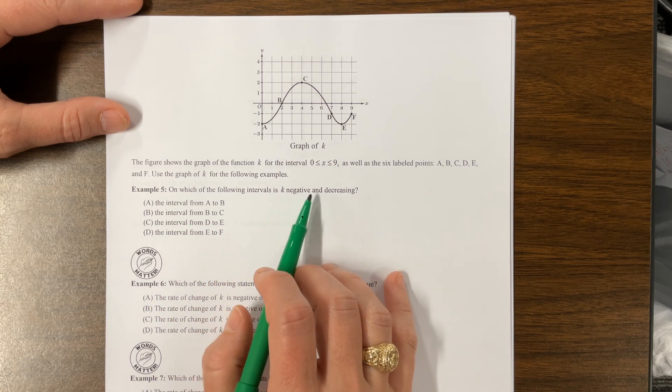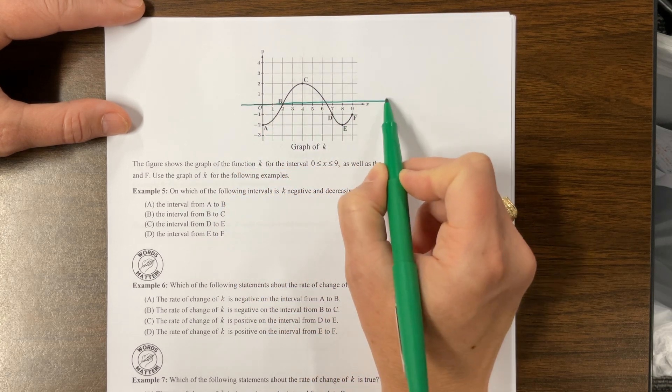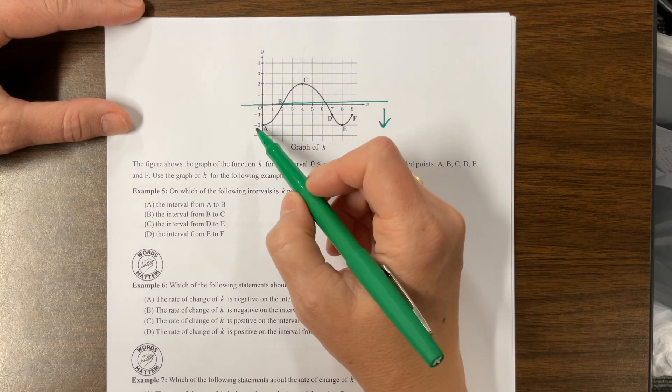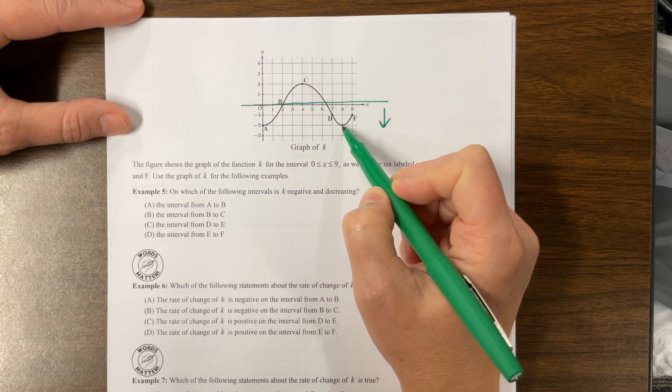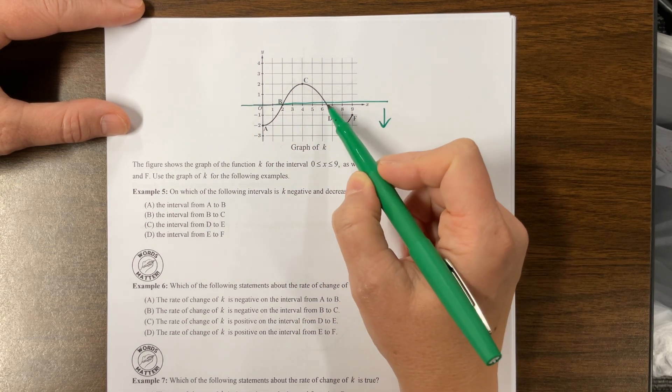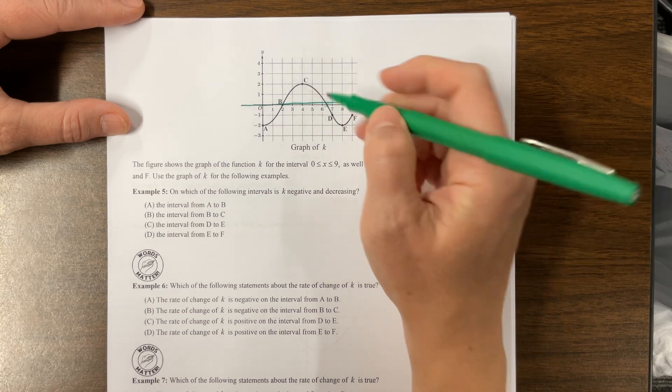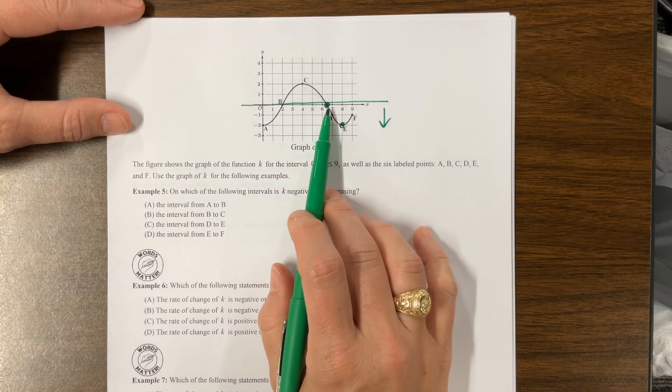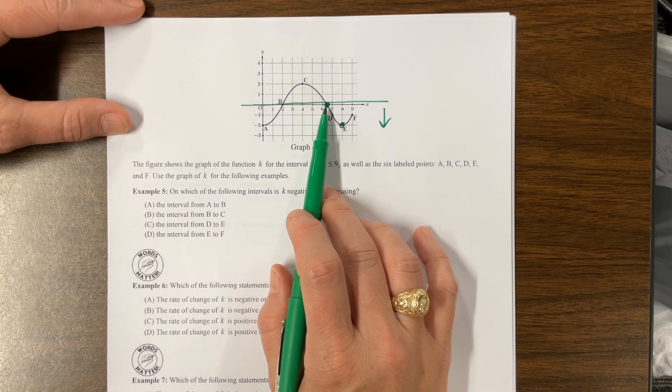Use the graph, which of the following intervals is K negative and decreasing? So K is negative and decreasing. That means K is the function. So K is going to be negative below the x-axis. It's increasing here, and it's decreasing here, and then it's increasing again. So it seems to be decreasing here to here, but they didn't label this point, but that may be okay.